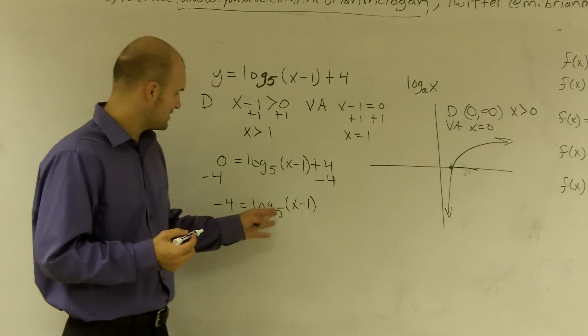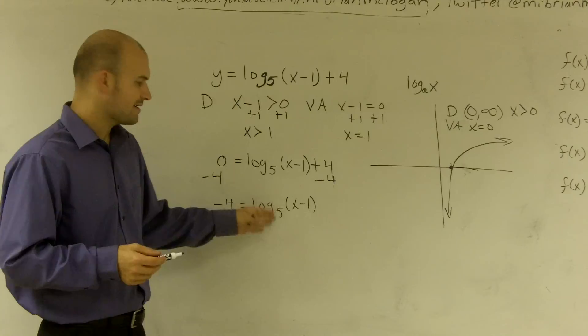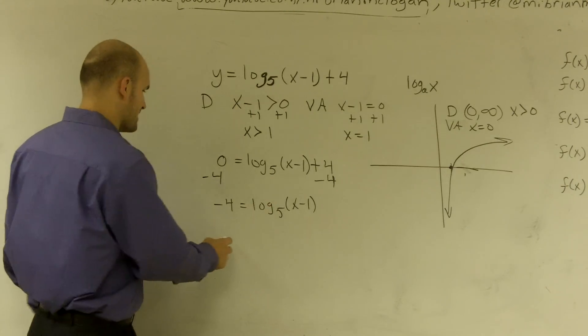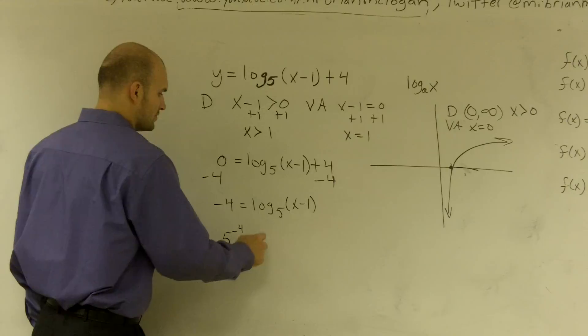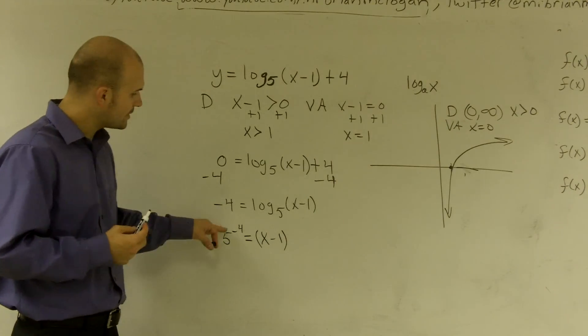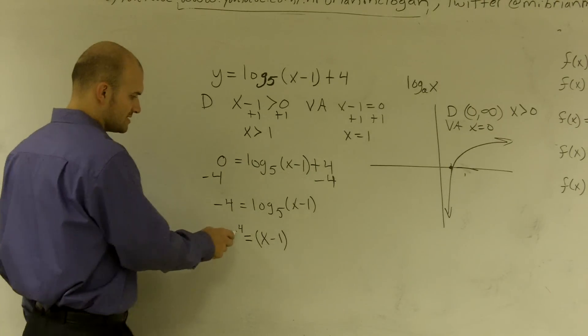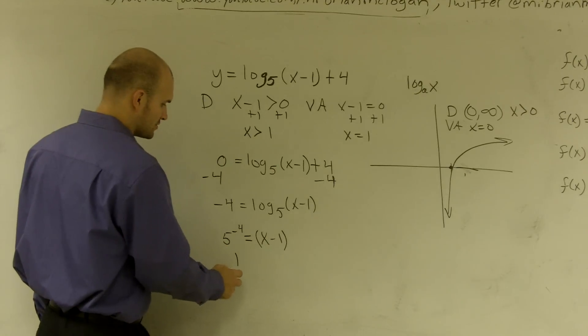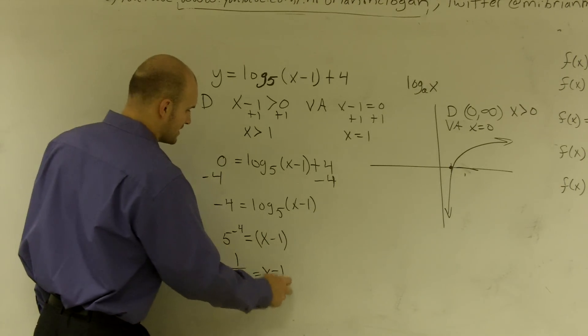Now I can convert this to exponential form. I can say 5 raised to the negative 4th power equals x minus 1. Whenever you have a negative exponent, you can put it over 1, so it's 1 over 5 to the 4th equals x minus 1. Well, 5 to the 4th is 625.